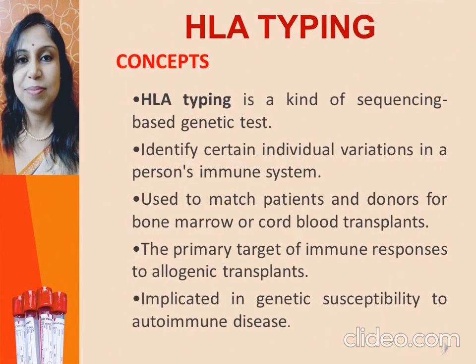HLA typing is a sequencing-based genetic test used to identify certain individual variations in a person's immune system. In this test, donors' antigens expressed on the surface of leukocytes — or their genes — are matched with those of the recipient. The closer the HLA antigens on the transplanted organ match the recipient, the more likely the recipient's body will not reject the transplant. In kidney transplants, there is substantial benefit if all the polymorphic HLA alleles are matched.